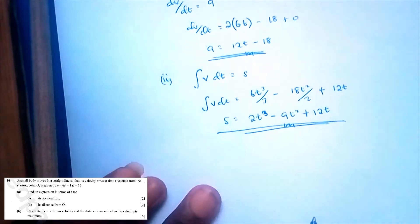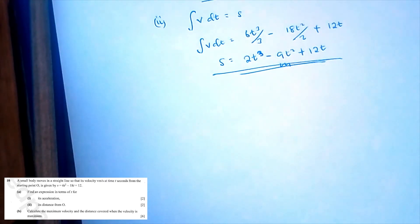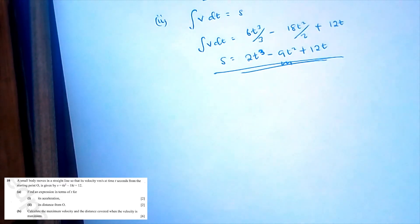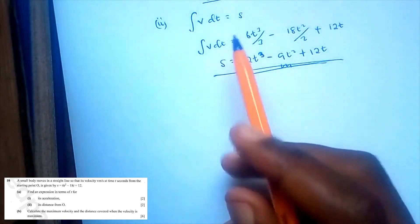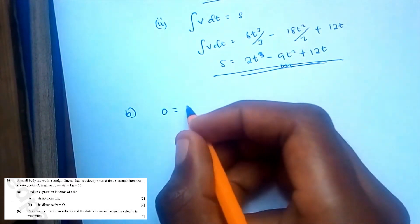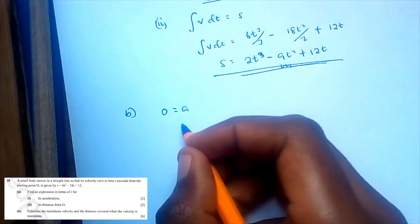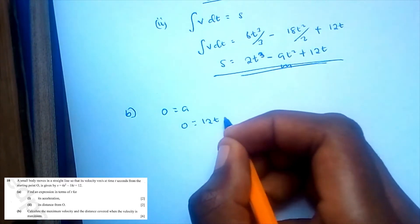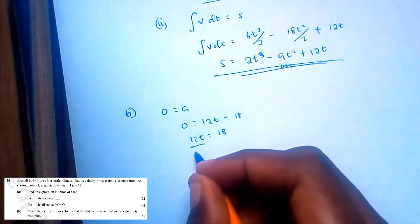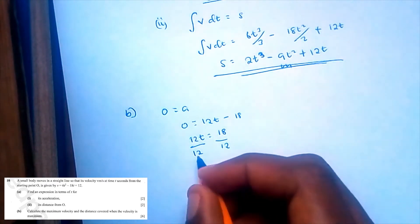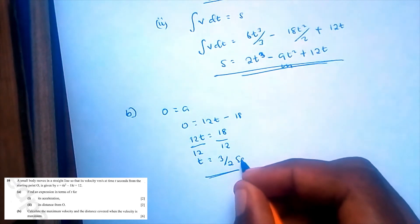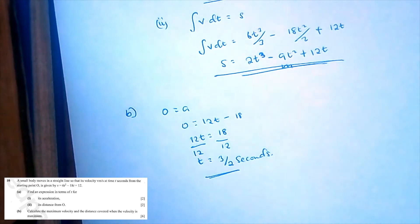Find the maximum velocity and distance covered when the velocity is maximum. At maximum velocity, acceleration equals 0. So 0 equals 12T minus 18. Therefore 12T equals 18, and T equals 18 over 12, which simplifies to T equals 3 over 2 seconds.